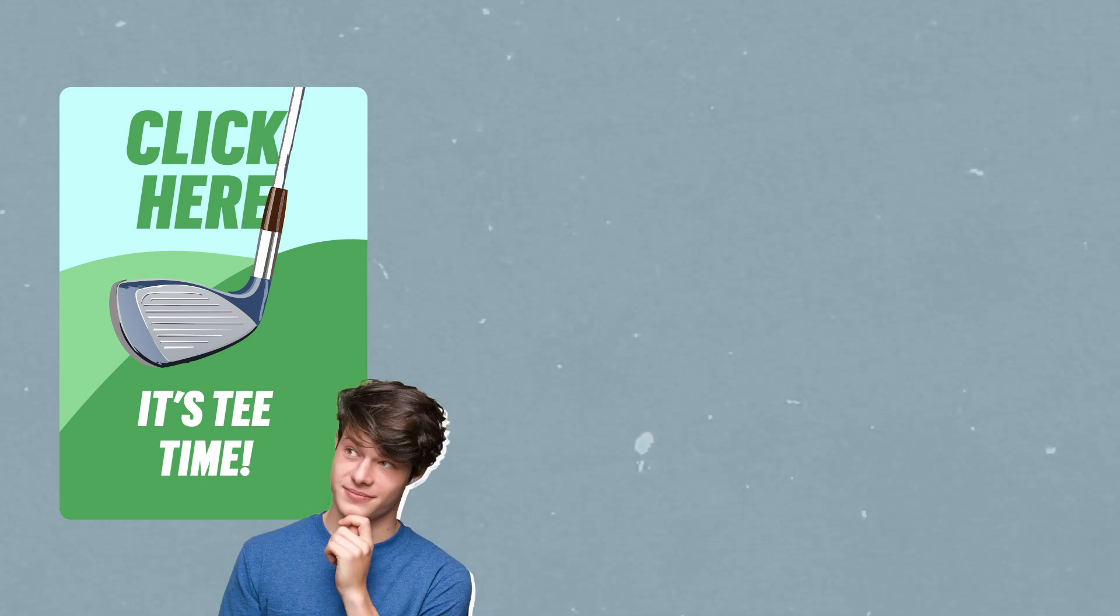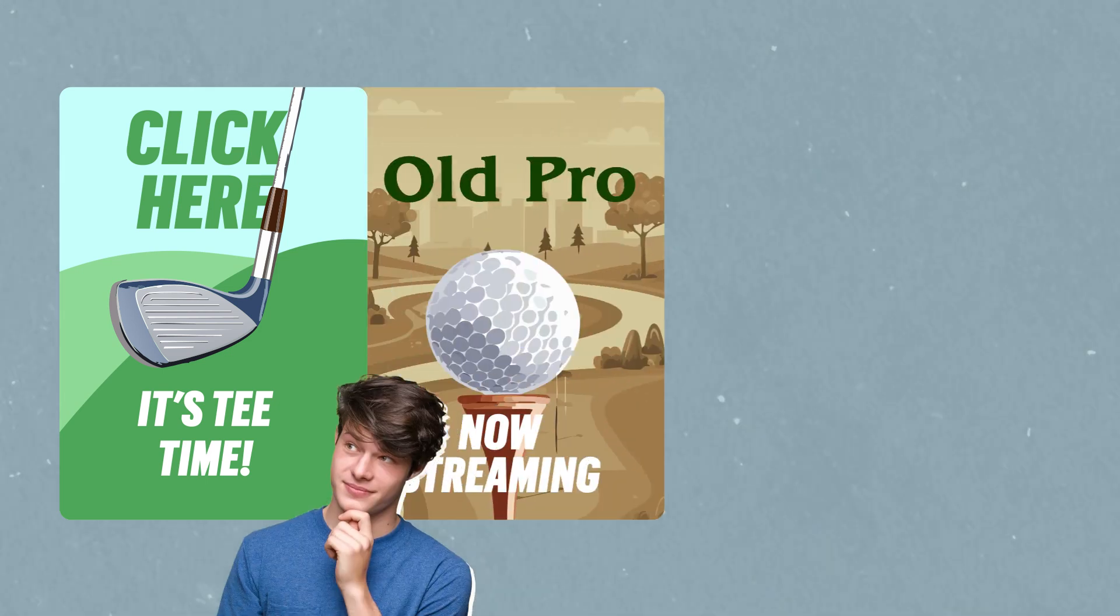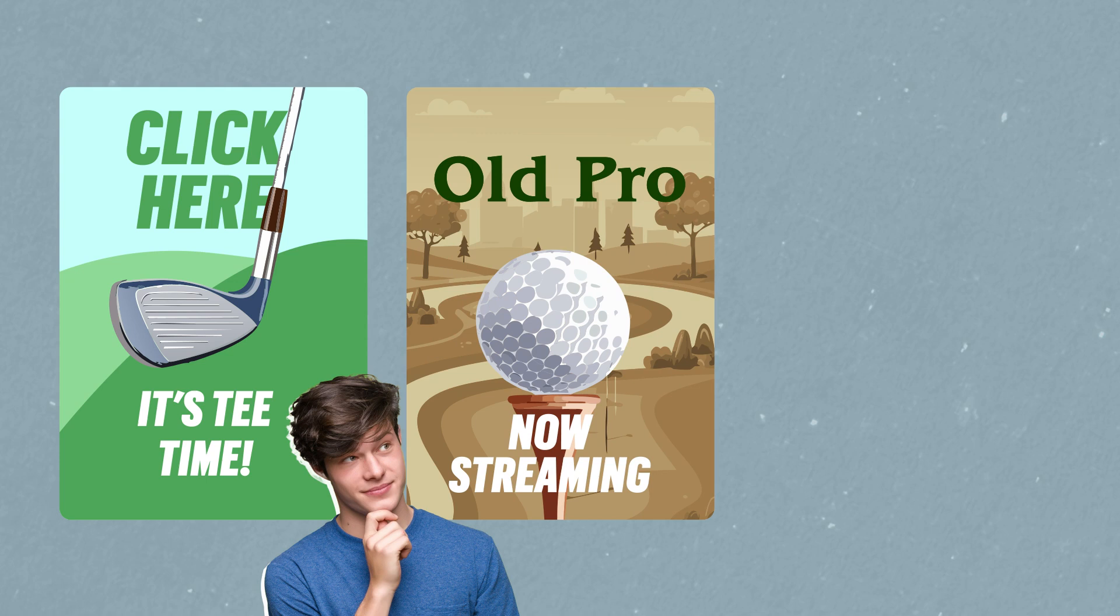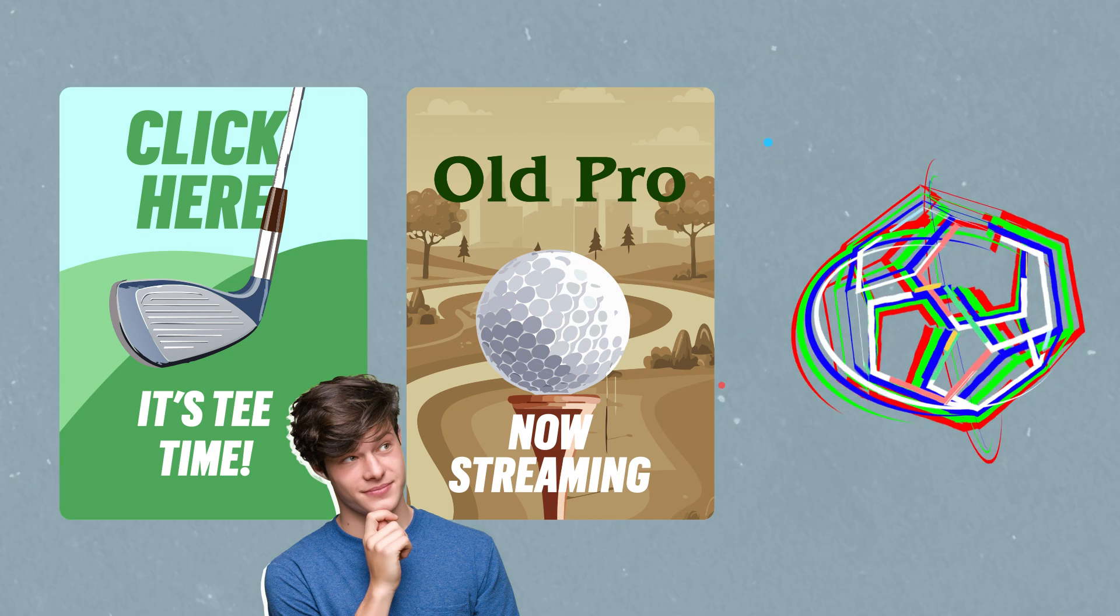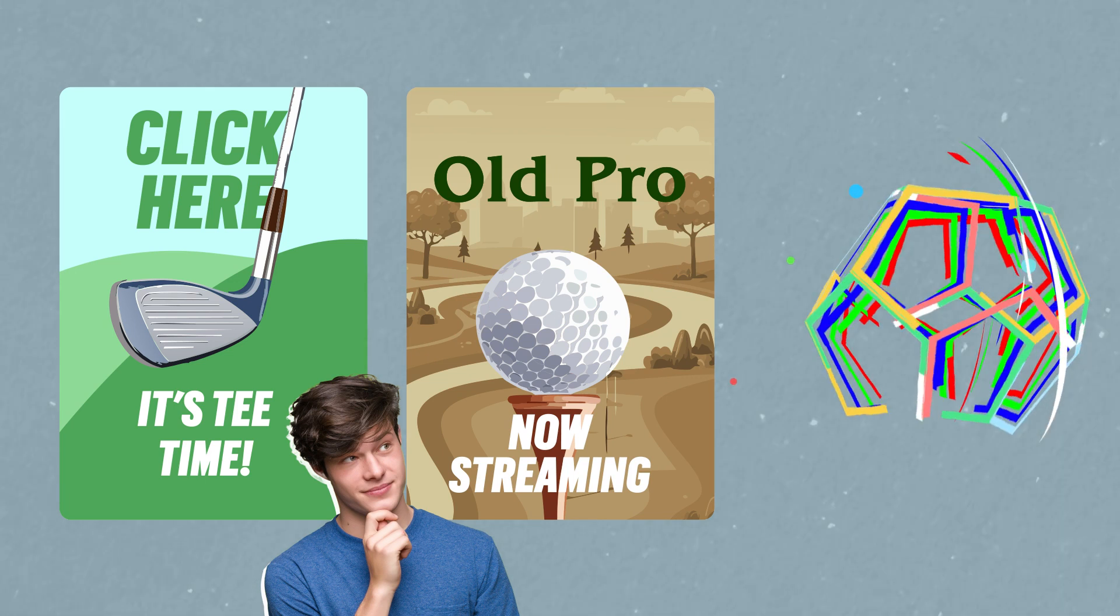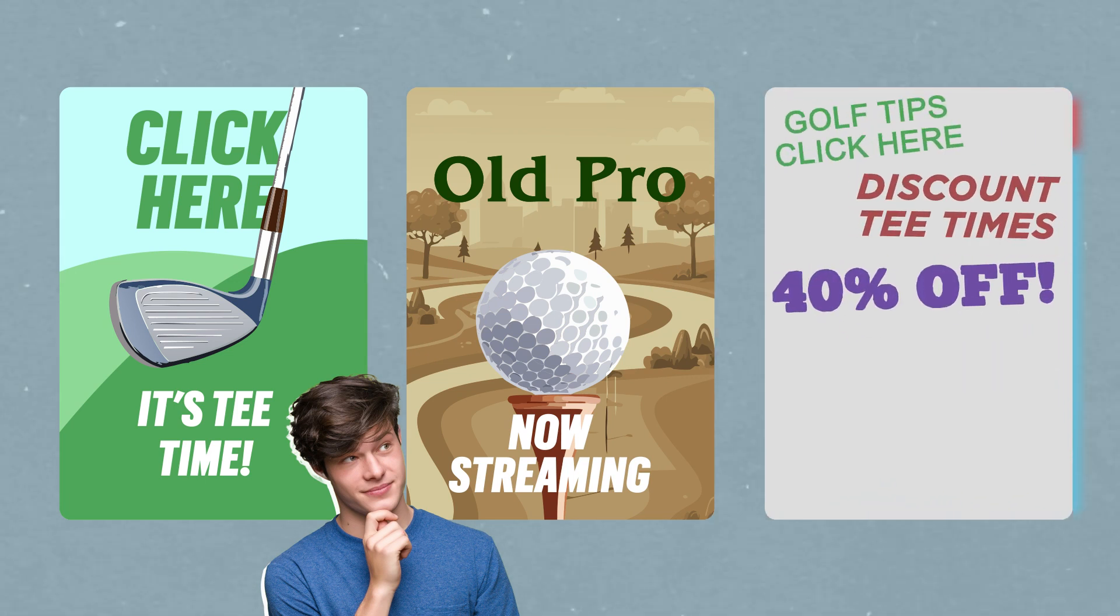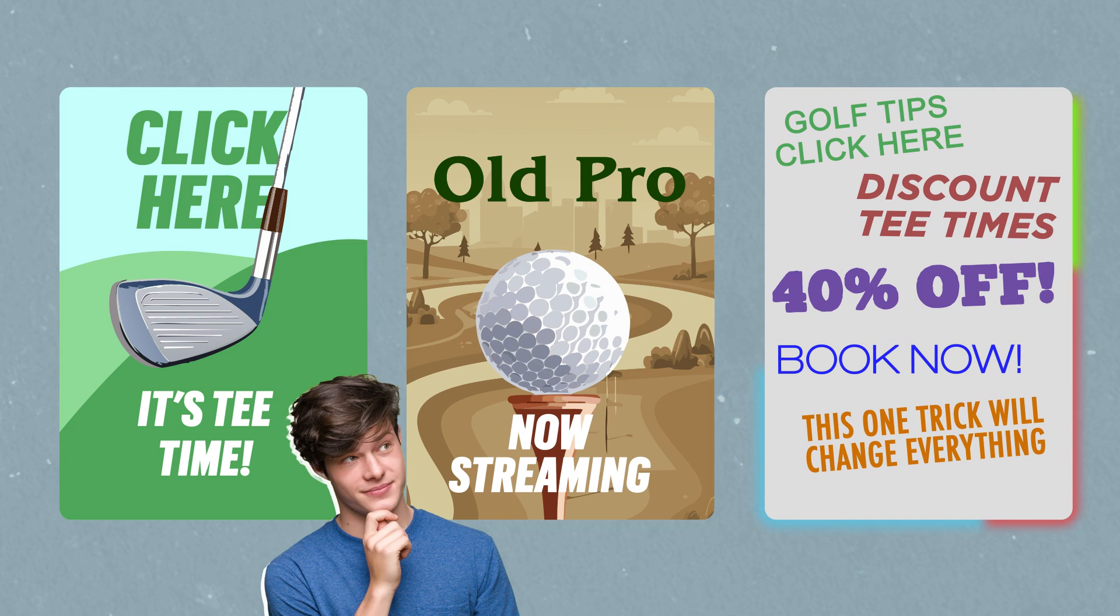Ever see an ad for something you were just thinking about? Or notice how your favorite app always knows what to recommend? That's because of algorithms. They learn from what you watch or like. But here's the catch. They mostly show you more of the same, because they know you'll like it, so you might miss out on new ideas or different opinions.